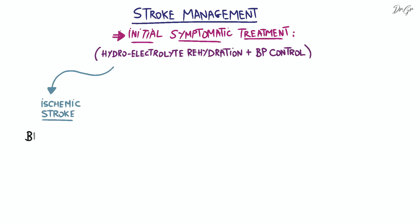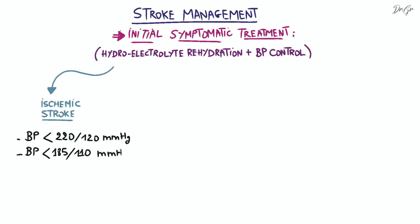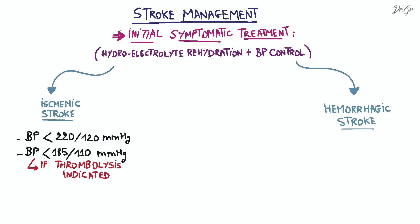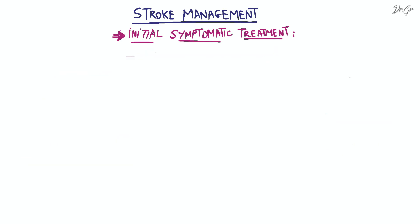For ischemic stroke, maintain blood pressure below 220 systolic and 120 diastolic, or below 185 systolic and 110 diastolic if thrombolysis is indicated. Thrombolysis means breaking up abnormal blood clots that restrict blood flow in the blocked arteries. For hemorrhagic strokes, maintain blood pressure below 180 systolic and 110 diastolic.